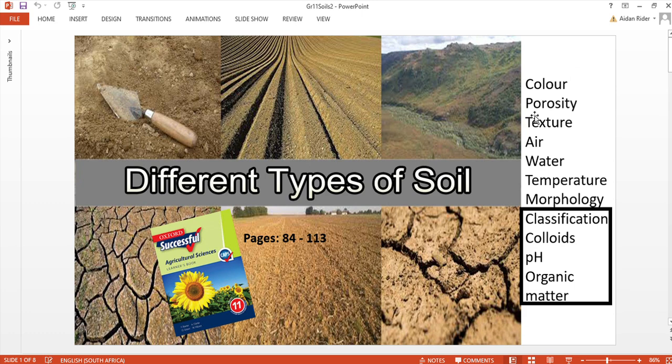We looked at colour, porosity, texture, air, water, temperature and morphology last term and now we're going to look at the classification and colloids, the pH, acidity, alkalinity and organic matter inside soils. So in your textbooks we are looking at pages 84 to 113.